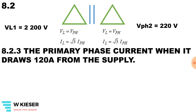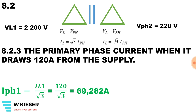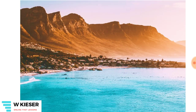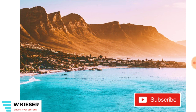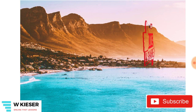Calculate the primary phase current when it draws 120 amps from the supply. Using the equation IL equals square root 3 times the phase current, the phase current equals IL divided by square root 3. Therefore 120 amps divided by square root 3 gives a phase current of 69.282 amps. Thanks for watching this video — don't forget to subscribe, like and share these videos.